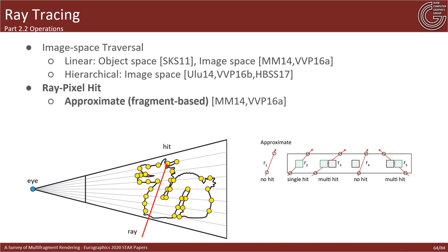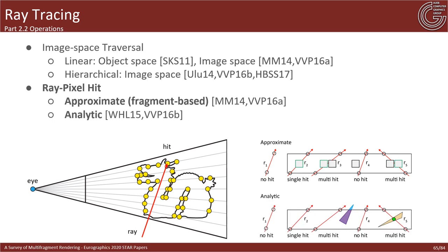Once a candidate pixel is visited in image space, we need to identify potential intersections between the ray and the pixel. This is performed by testing the image-projected ray against all fragment samples assigned to that pixel. There are two major approaches: approximate solutions that compare the ray's depth extents against the depth sample's depth extents to identify a hit, and analytic approaches that operate on primitive indices captured in per-pixel linked lists, offering accurate ray-primitive intersection tests.